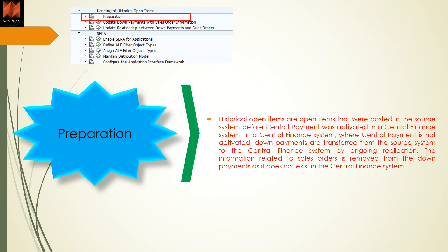When central payment is not activated, down payments are transferred from the source system to the CFIN system by ongoing replication. However, information related to the sales order is removed from the down payment — it does not exist in the Central Finance system, since CFIN does not have sales order details.